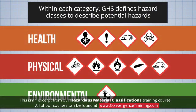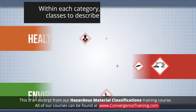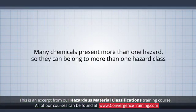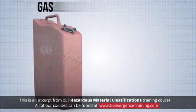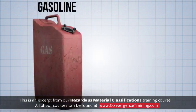Within each of these categories, GHS defines several hazard classes to further describe a chemical's potential hazards. Many chemicals present more than one hazard, so they can belong to more than one hazard class.